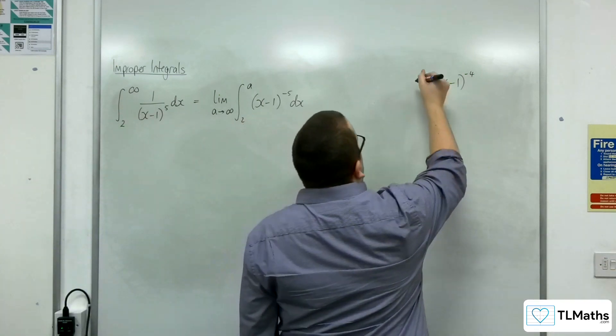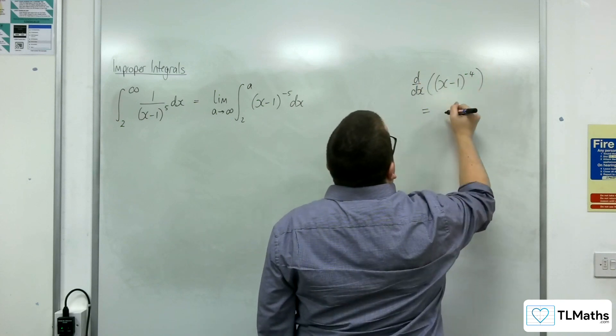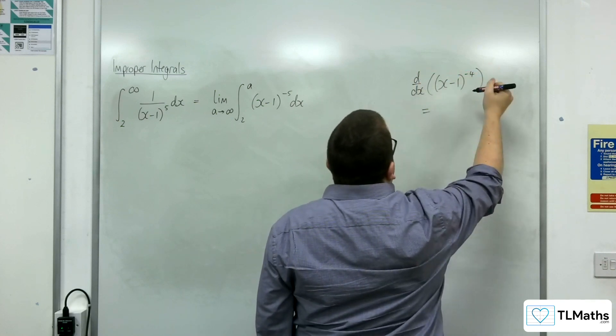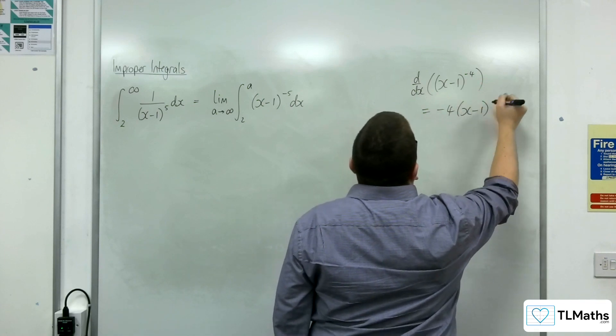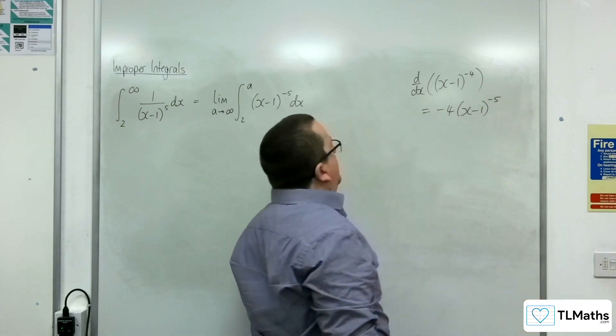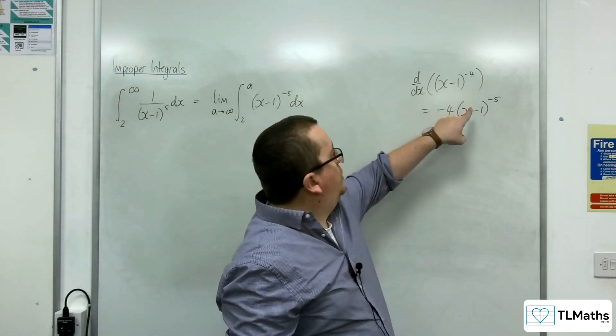Now if I differentiate this, I'm going to get, well, the derivative of the inside is just 1, so minus 4 comes down in front and take 1 from the power.